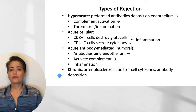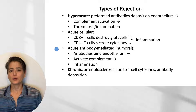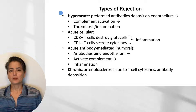There are four types of rejection seen in solid organs: hyperacute, acute cellular, acute antibody-mediated, and chronic. Hyperacute, acute cellular, and acute antibody-mediated share a similar mechanism, while the mechanism in chronic rejection is different.